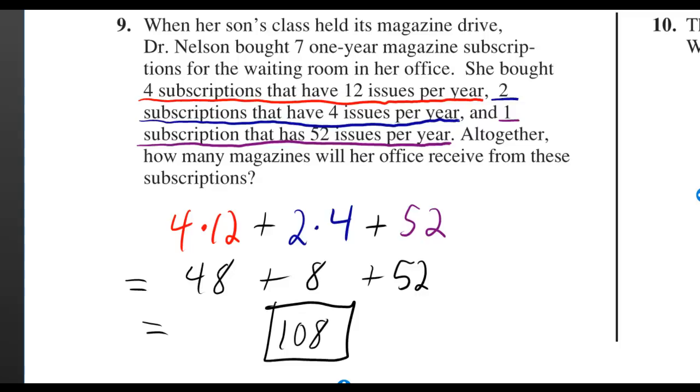She bought four subscriptions that have 12 issues per year, two subscriptions that have four issues per year, and one subscription that has 52 issues per year. Altogether, how many magazines will her office receive from these subscriptions?